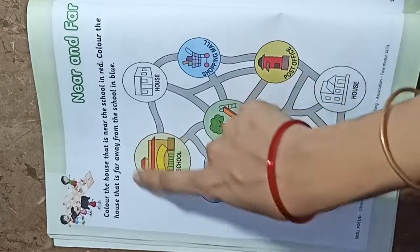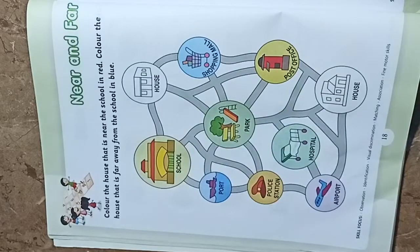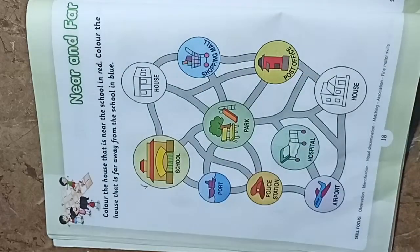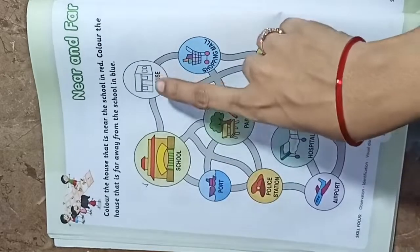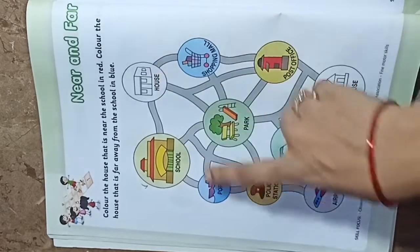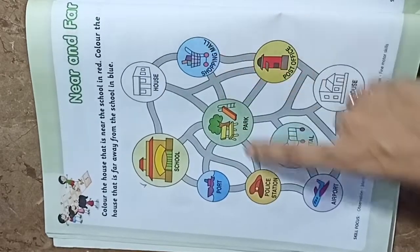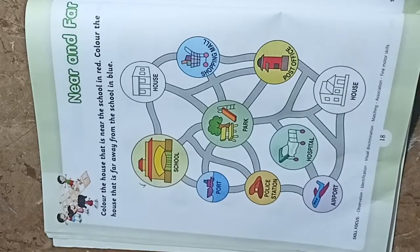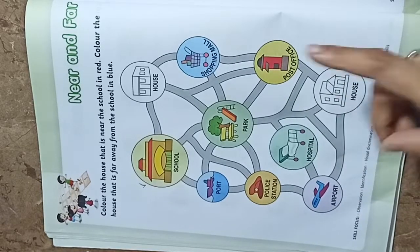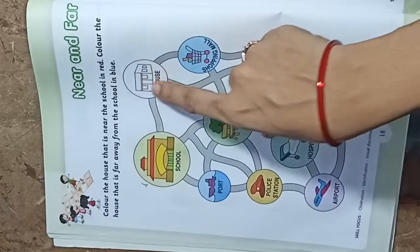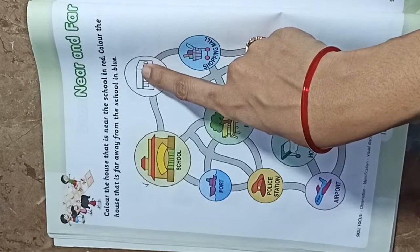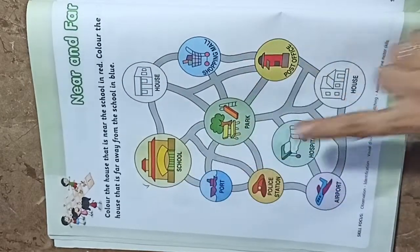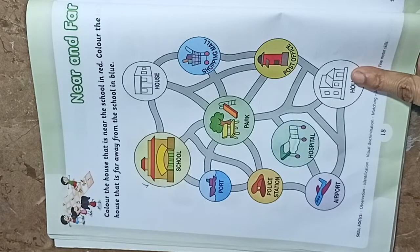Here is our school — this is our main school. Around it we have: a house, a park, a shopping mall, a police station, a hospital, a post office, and an airport, and another house. The house that is closest to the school is colored red, and the house that is far away from the school is colored blue.